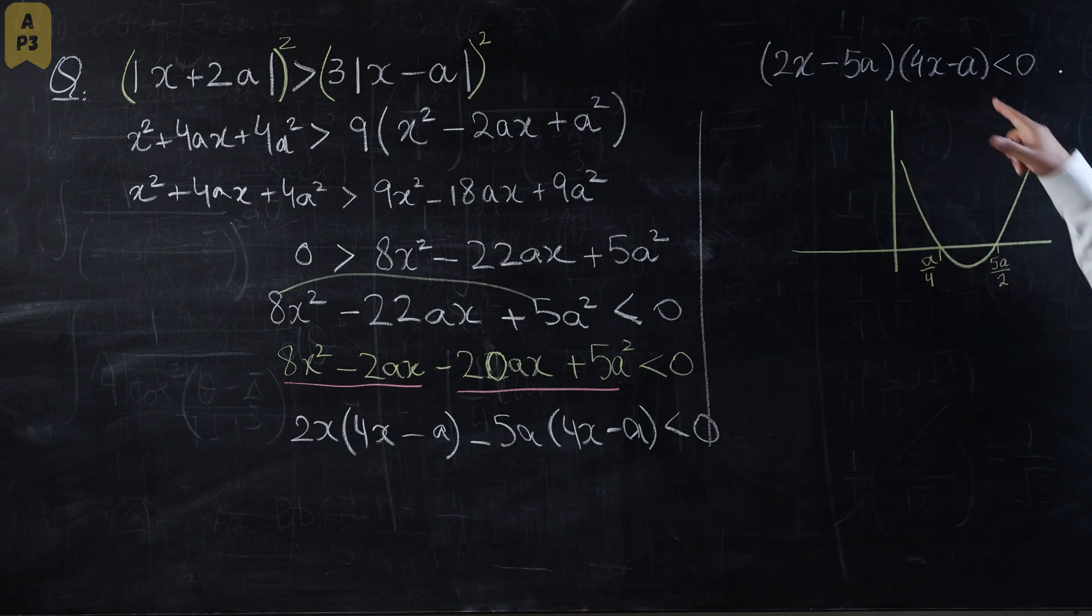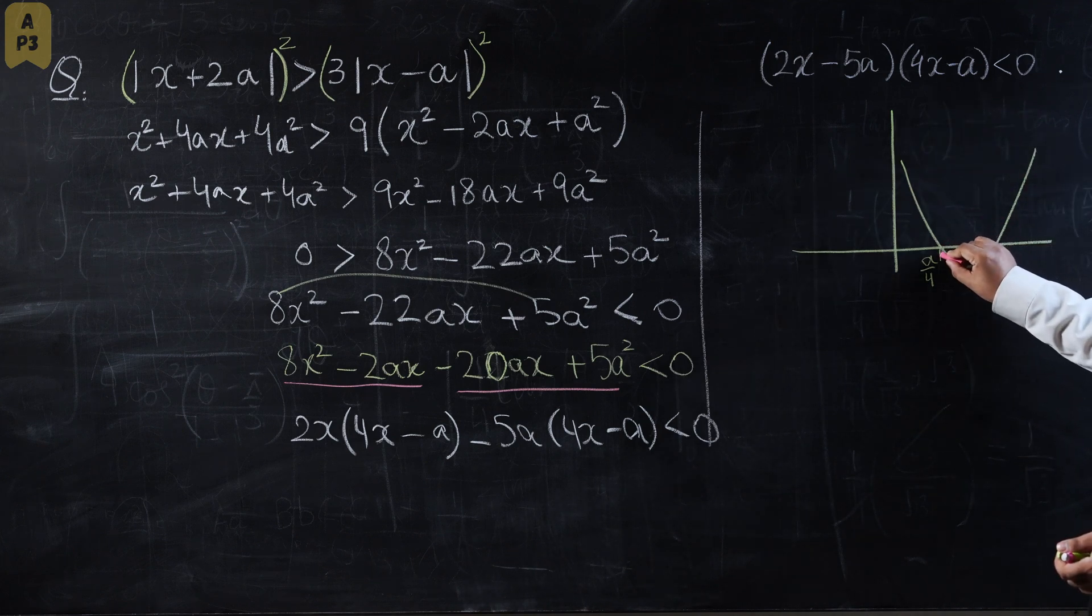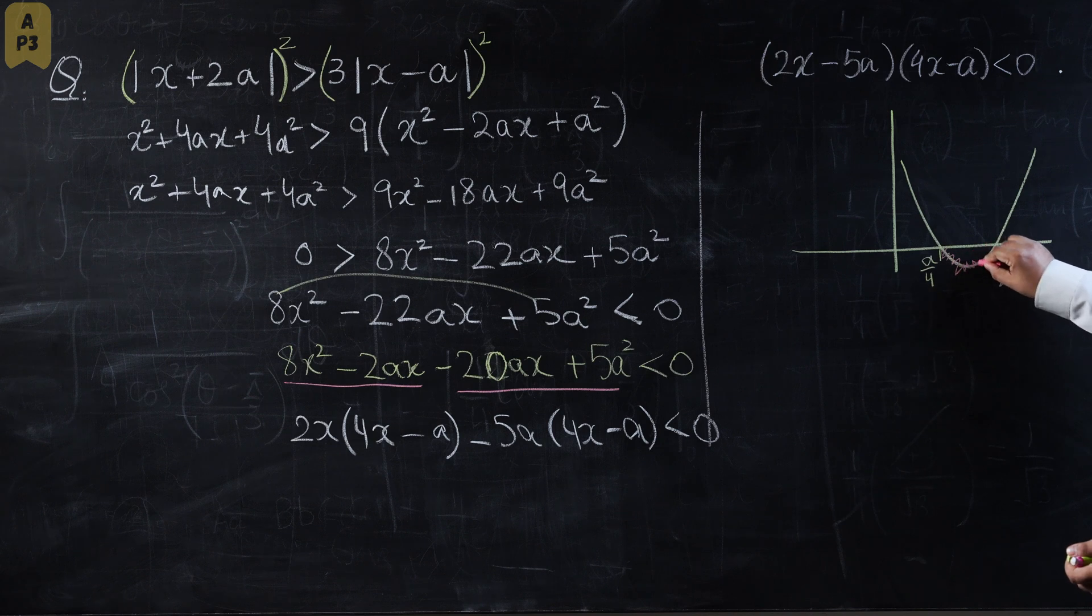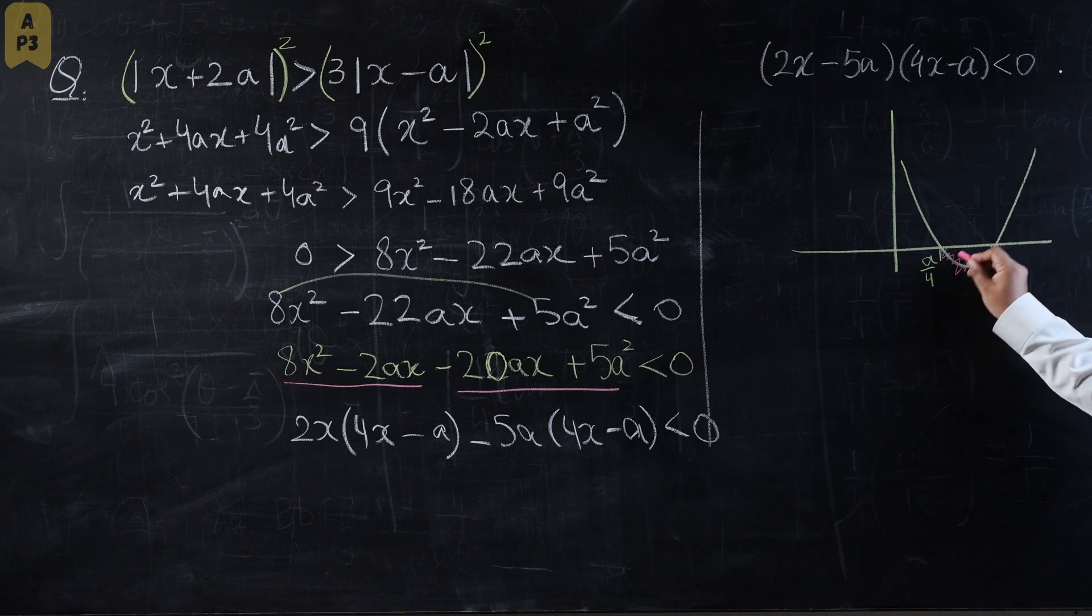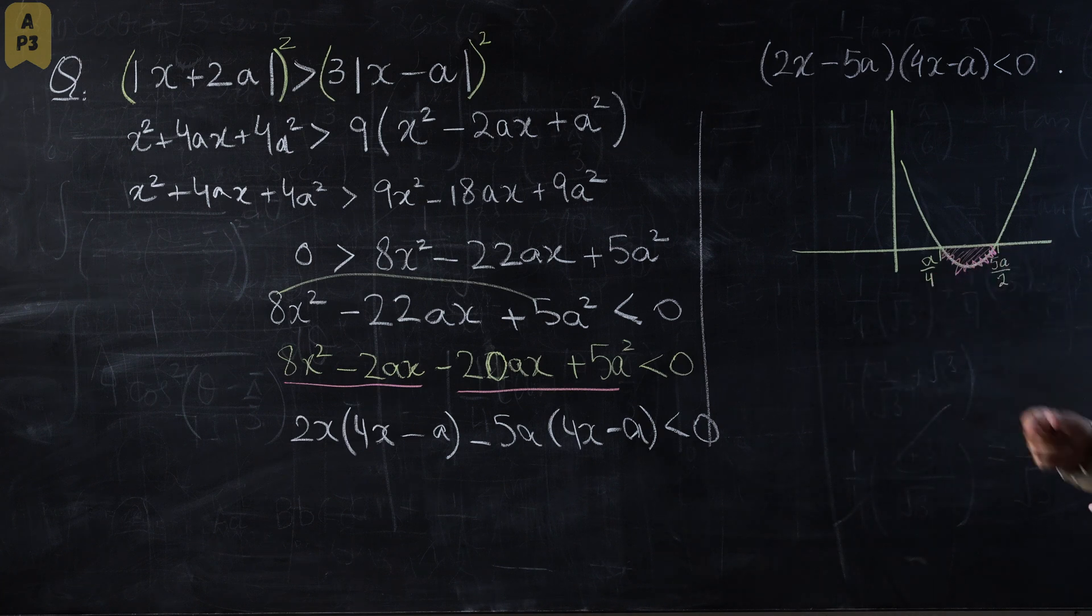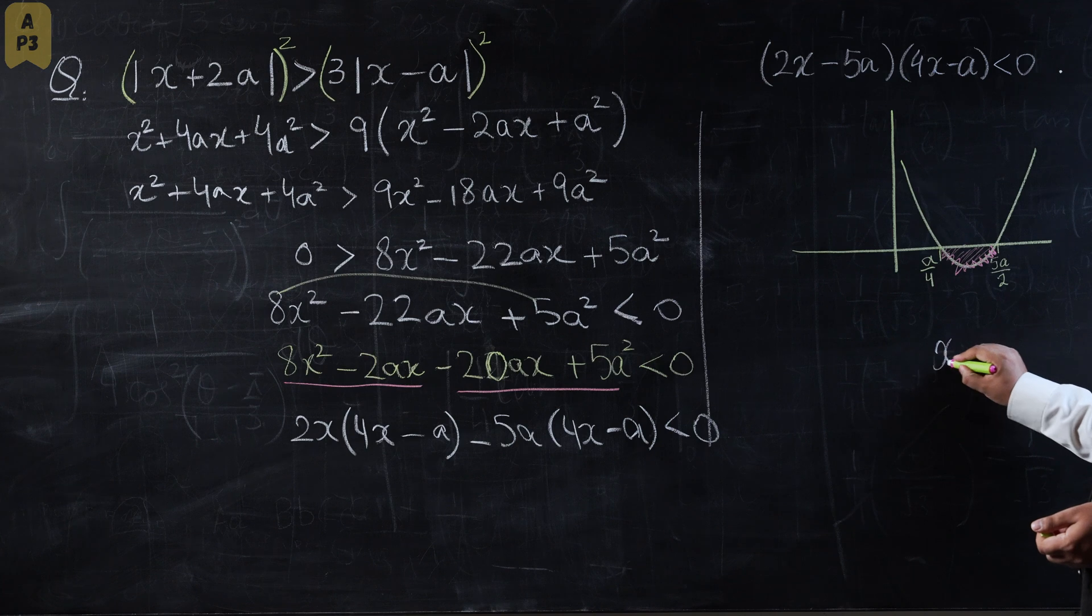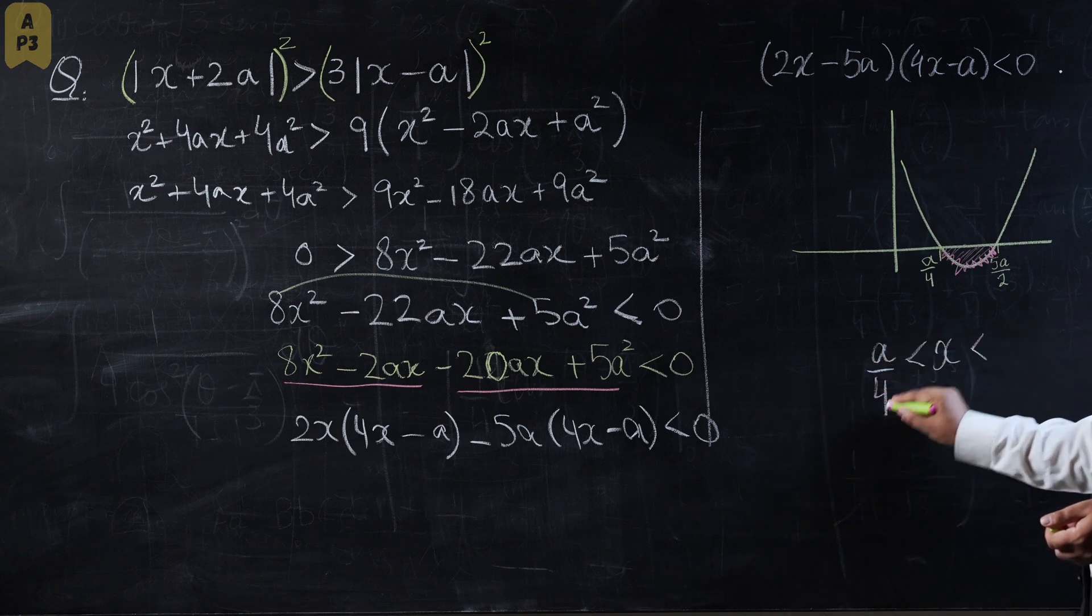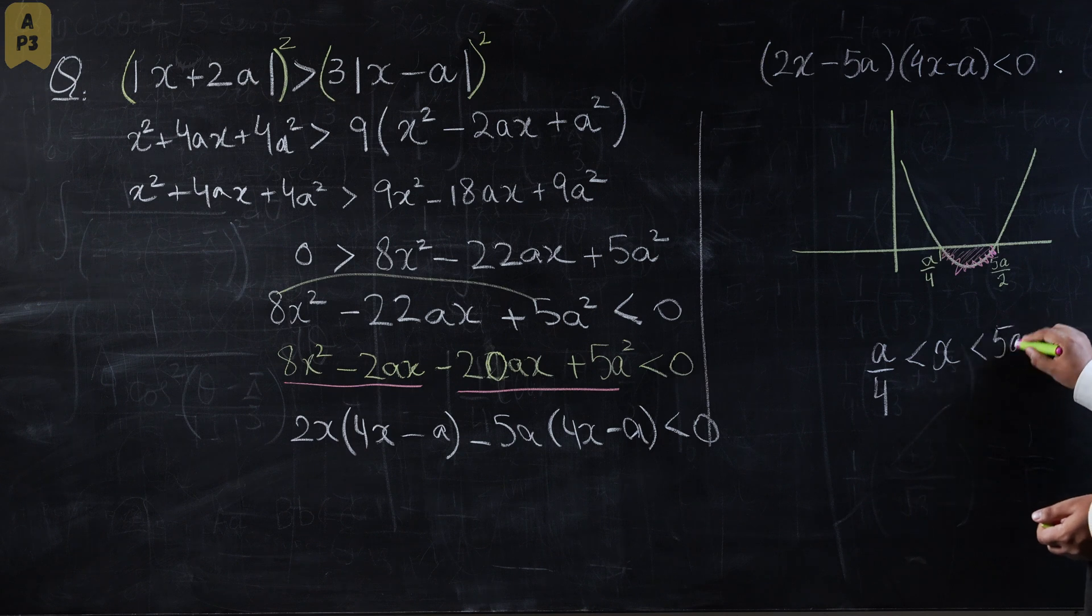Once we have both of these, we understand we need the inequality less than zero. Whenever it is less than zero, we are required to look at the region of the curve which is below the x-axis. Below the x-axis is this region, so I'm going to color this region as red. We're going to write the values on the x-axis which are satisfied with this colored region. We can see that x is bounded between a over 4 and 5a over 2.